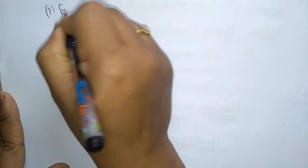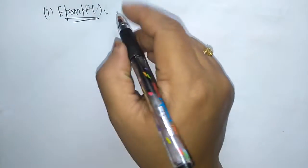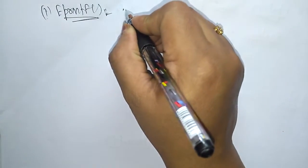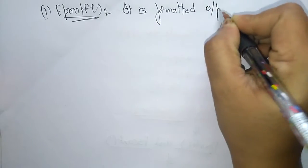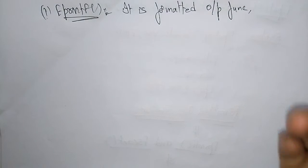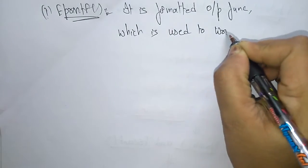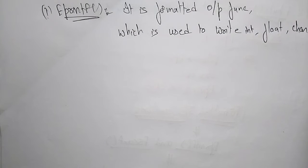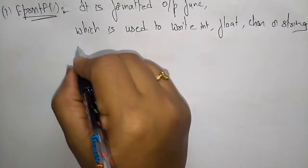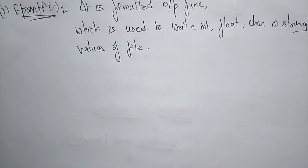Let me write the syntax for fprintf. fprintf is a formatted output function, which is used to write integer, float, character, or even string values to a file.